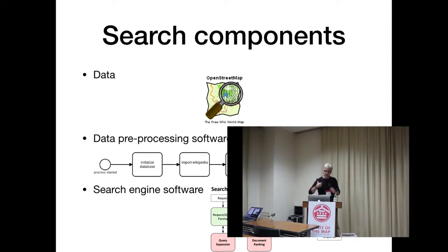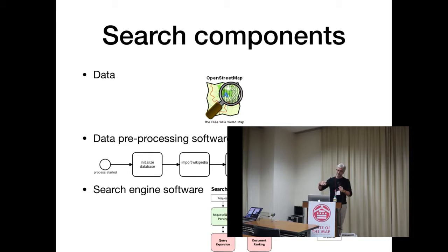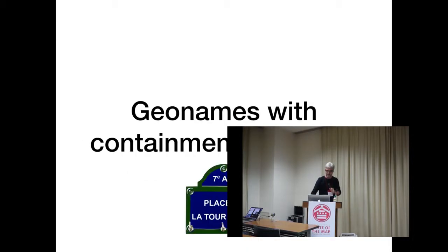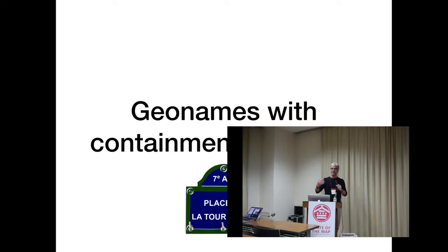The examples I'm showing have a front end, but that's just for the sake of example. I'm starting first to talk about geonames, which contain some hierarchy.